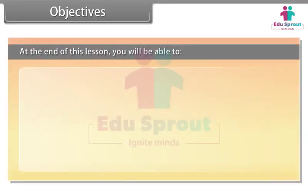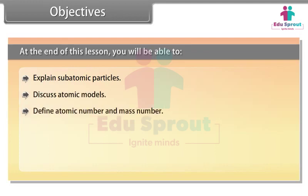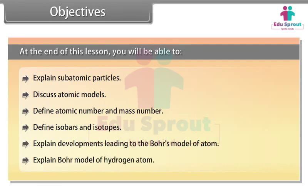At the end of this lesson, you will be able to: explain subatomic particles, discuss atomic models, define atomic number and mass number, define isobars and isotopes, explain developments leading to Bohr's model of atom, and explain the Bohr model of the hydrogen atom.